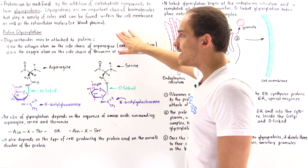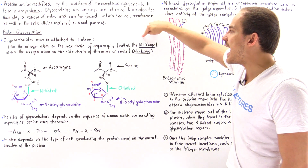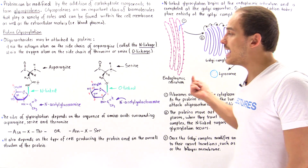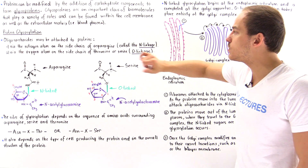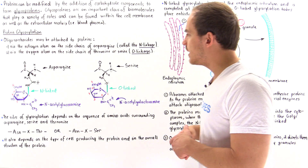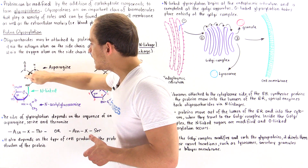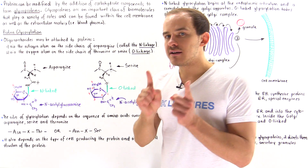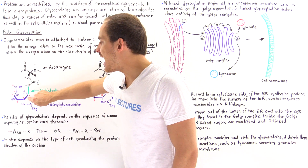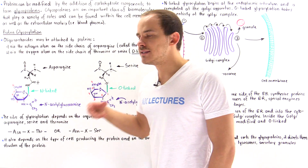Oligosaccharides may be attached to proteins via the nitrogen atom on the side chain of asparagine — this is called the N-glycosidic linkage — or via the oxygen atom of the side chain of threonine or serine, which is known as the O-glycosidic linkage. Looking at the diagrams, in the first case we have the asparagine amino acid's side chain forming an N-glycosidic bond between the nitrogen atom and the anomeric carbon, carbon number 1, of N-acetylglucosamine.